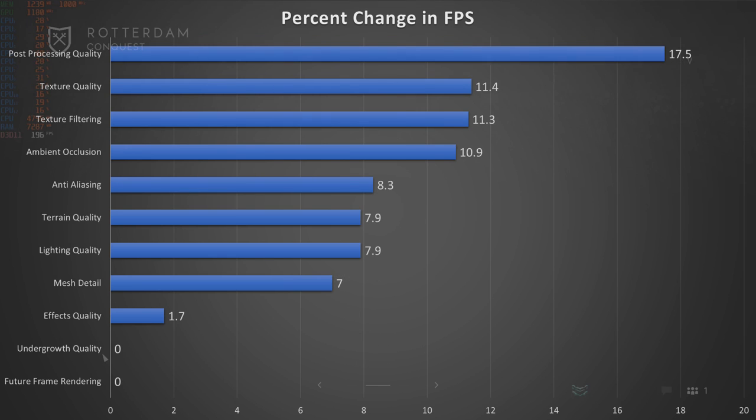The chart we're going to be throwing up here is called the percent change in FPS by setting. If you were going to be running at 100 FPS right now and you're trying to find a setting to adjust to get you up to 120 FPS for that sweet 120 Hz monitor you just picked up, then you're going to want to look for a setting that changes your FPS by 20%. Popping the chart up now.